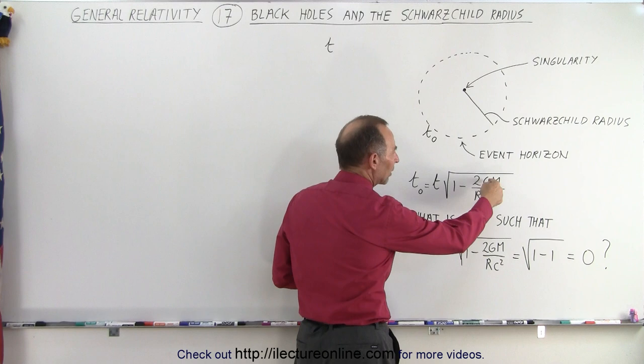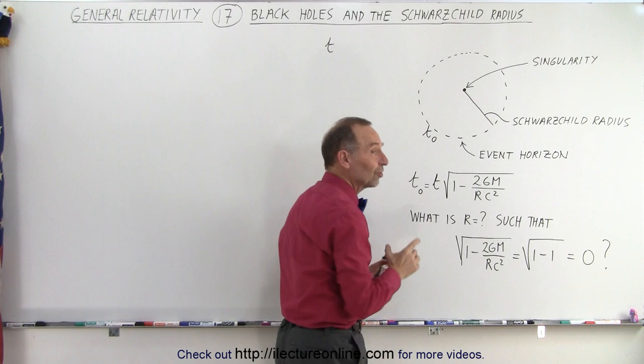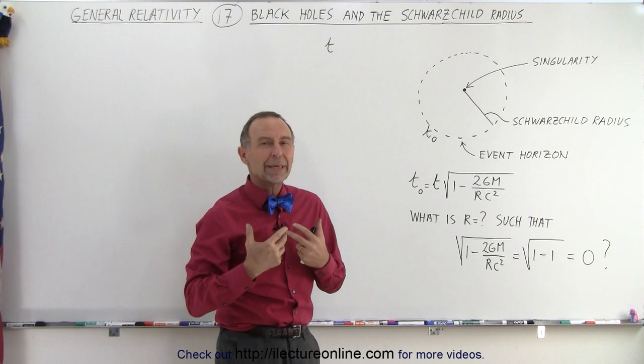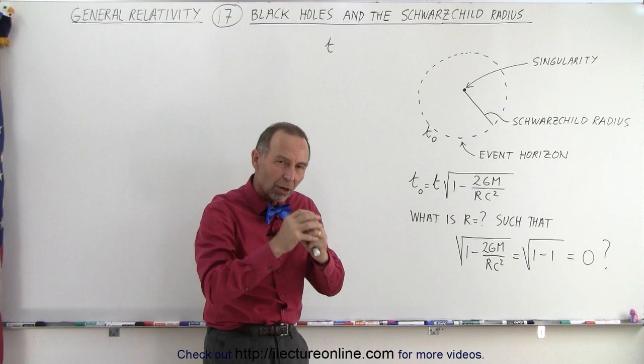Is there ever a point where this quantity right here underneath the radical can become equal to 1, so that 1 minus 1 is 0, with other words that time would stand still? Is there such a place in the universe where this could happen? And that's when they began to theorize the concept of a black hole.